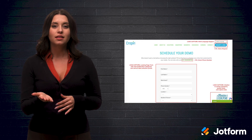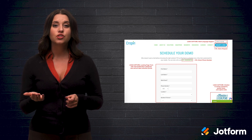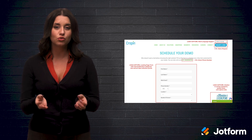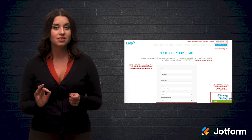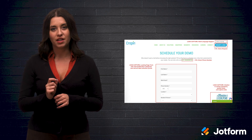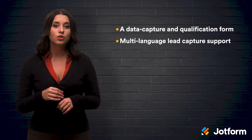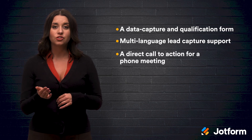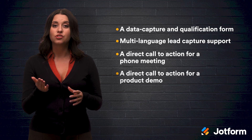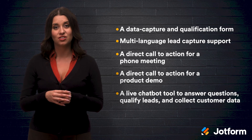Let's look at the agricultural app Croppin. They're able to automate lead capture in one simple landing page. They use a combination of automated data collection mechanisms to capture various data points, and at the same time, drop-down menus qualify leads by location, land size, number of farmers, types of agricultural company, and more. On their lead capture landing page, Croppin also features a data capture and qualification form, multi-language lead capture support, a direct call to action for a phone meeting, a direct call to action for a product demo, and a live chat bot tool to answer questions, qualify leads, and collect customer data.